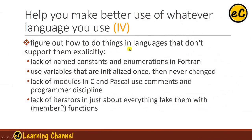Number four continues this discussion for unsupported features. Lack of named constants or enumeration in Fortran — use variables that are initialized once and then never changed. Lack of modules in C and Pascal — use comments and programmer discipline. Lack of iterators in just about everything — fake them with functions. Again, most of these issues no longer exist in modern languages.